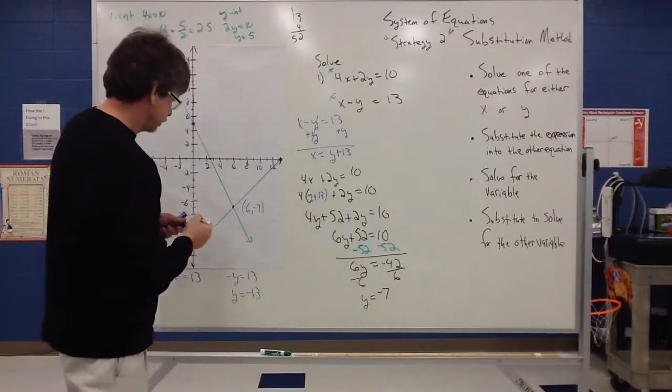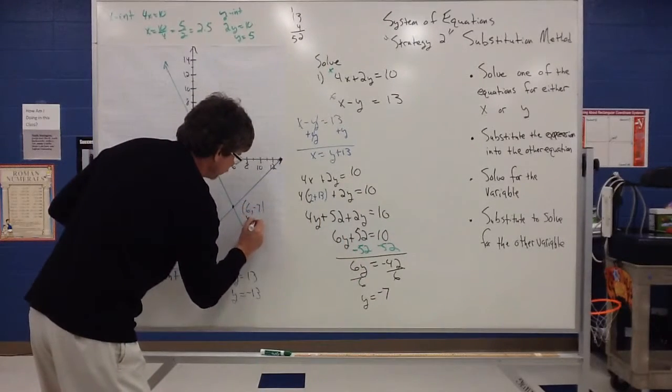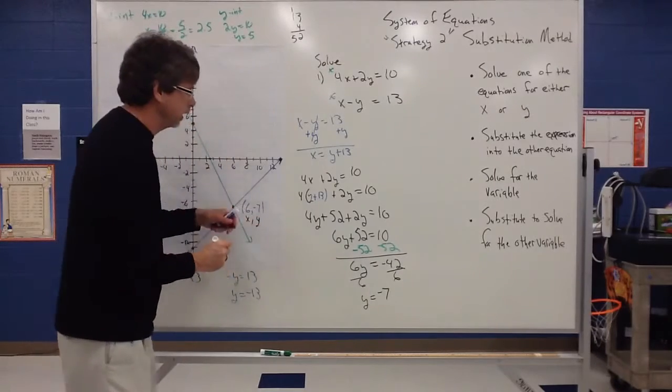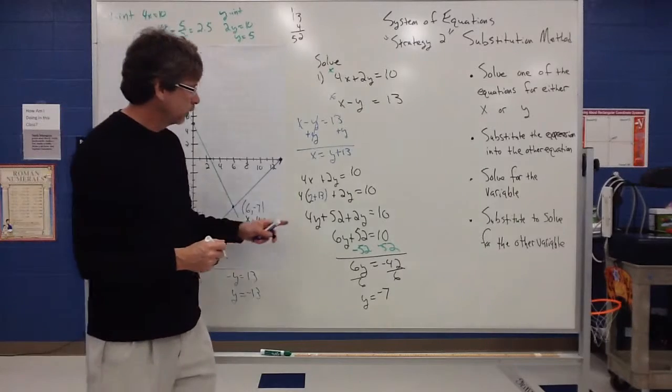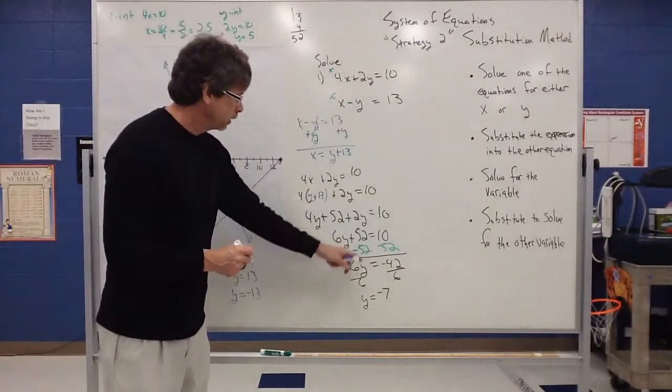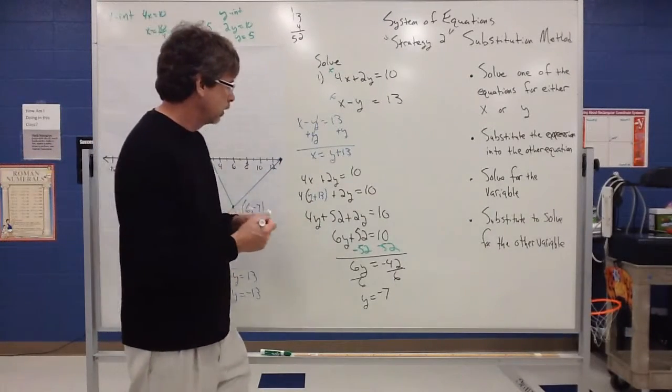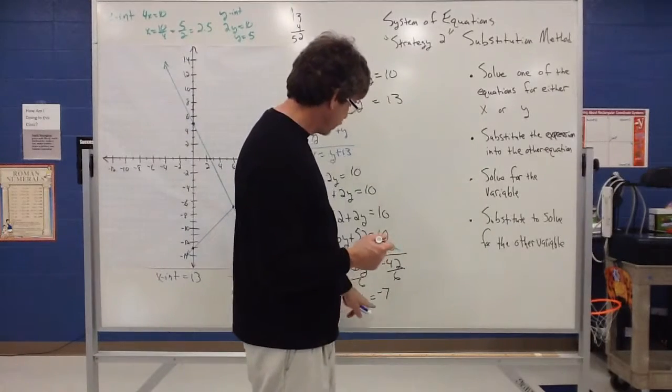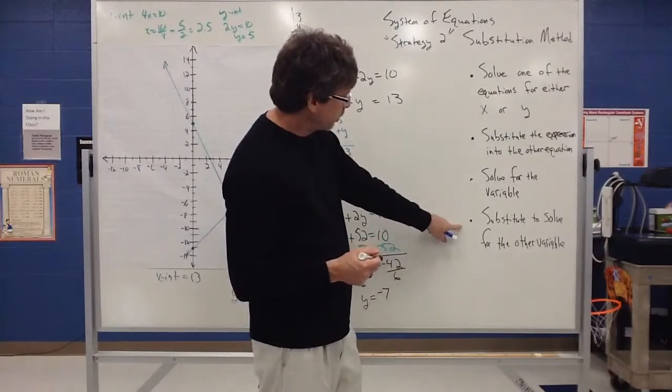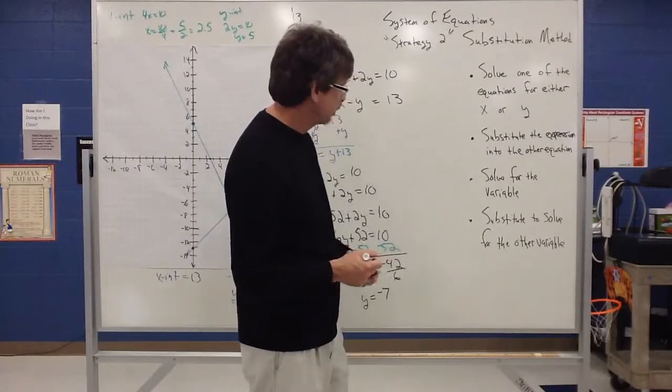And notice how over here our x value was a 6, our y value was indeed a negative 7. So I'm feeling pretty good about this answer because that's actually matching my graph. So I can approach this problem using a different strategy altogether. So I substitute into the expression, I then solve for the variable, I got y equals negative 7. My last step is then to substitute to solve for the other variable.